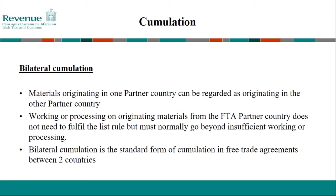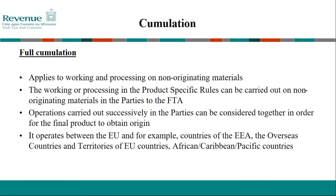There is also diagonal and regional accumulation, involving more than two countries provided they have free trade agreements containing identical origin rules and provision for diagonal or regional accumulation between them. Materials must be originating from the countries participating in the diagonal accumulation. Full accumulation applies to working and processing on non-originating materials — the working or processing can be carried out in the non-originating materials in the parties to the free trade agreements. This operates between the EU and countries such as the EEA or African Caribbean and Pacific countries.